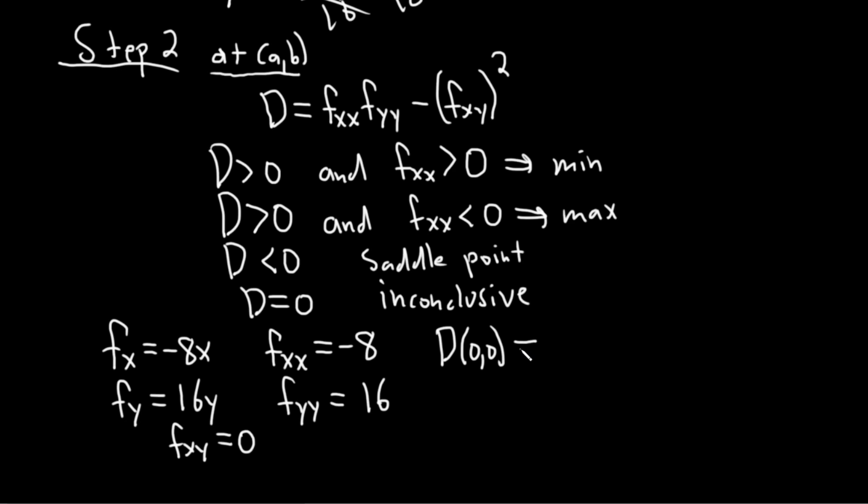So this is fxx the first one, so negative 8. fyy so that's 16. And then minus fxy which is 0. So it'll just be 0 squared. So it's 8 times 16. So 8 times 10 is 80. 8 times 6 is 48. So 80 plus 48 is 128. And it's all negative.